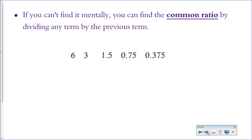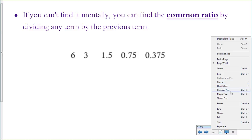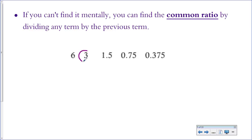If you ever have a hard time finding the common ratio just by looking at it, you could always set up a division problem to find it. So if you have a sequence and you can't figure out what R is, you can take any term and divide it by the term that comes before, and you'll figure out the common ratio that way. So 3 divided by 6 shows us that our common ratio for this sequence is 1 half, or 0.5 as a decimal.